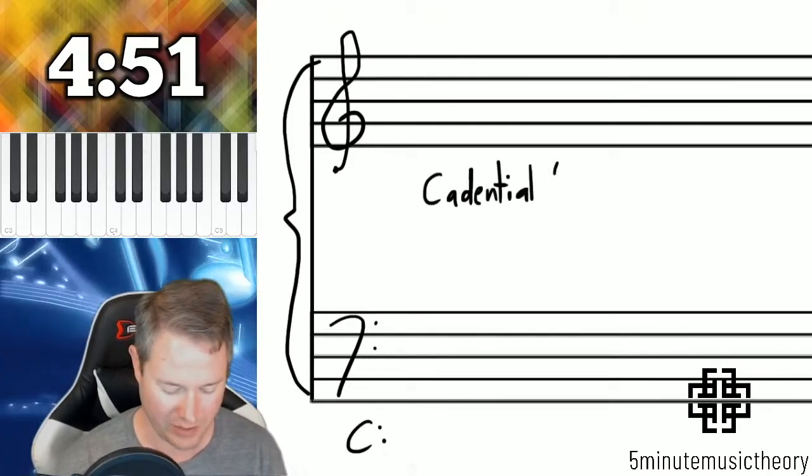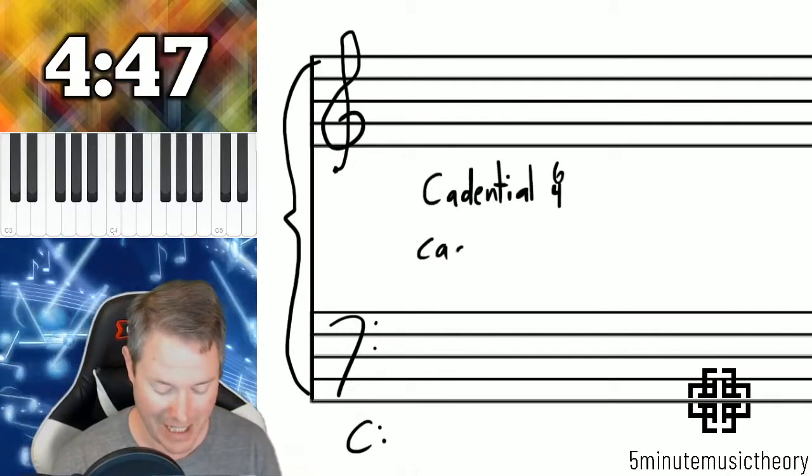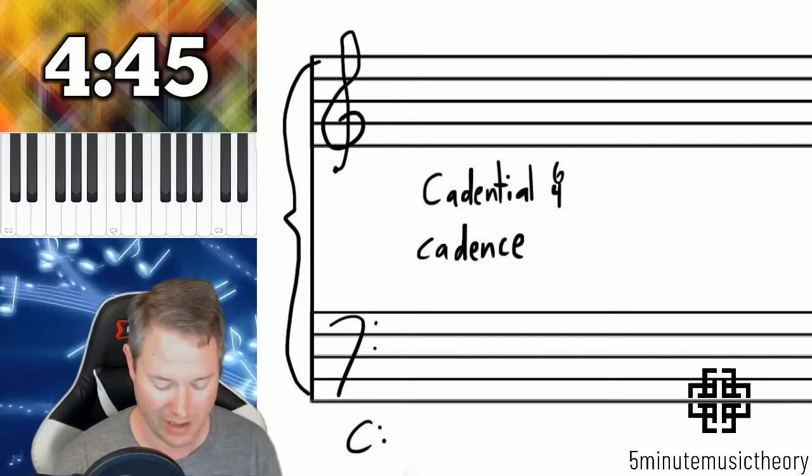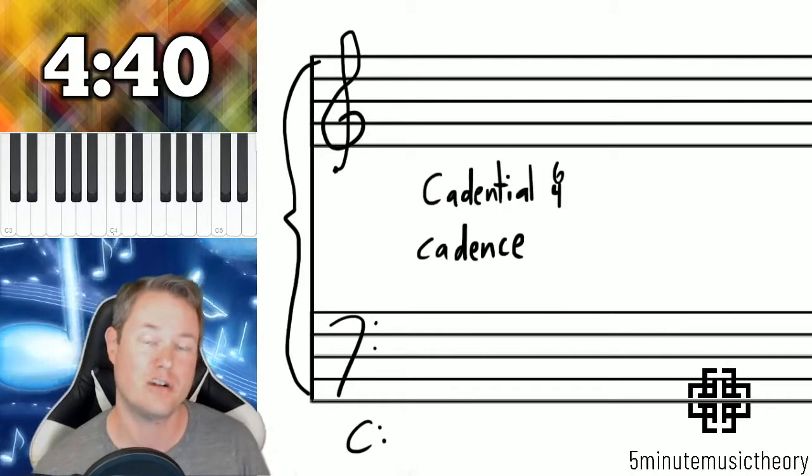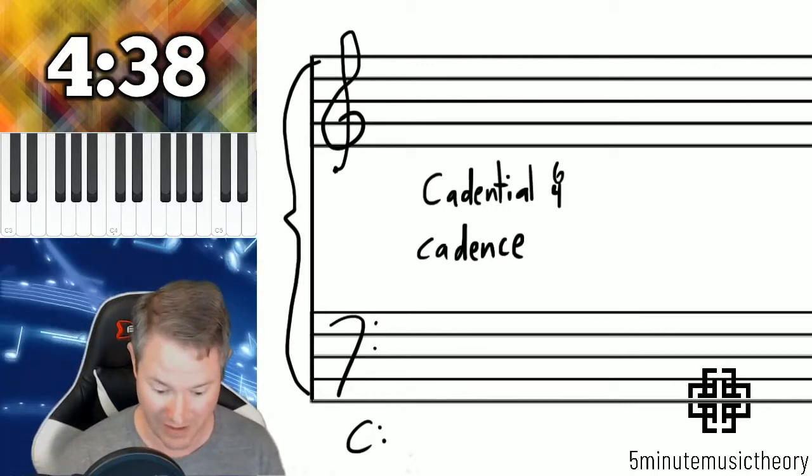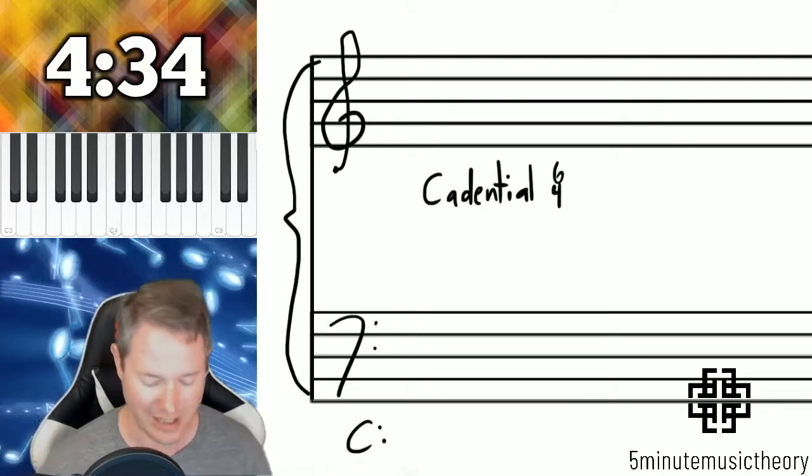The reason it's called the cadential 6-4 is because it typically happens in what's called a cadence. Cadences we will get into in a few videos but basically a cadence is musical punctuation. Cadences determine the ends of phrases so they're very important and cadential 6-4s tend to happen during cadences.